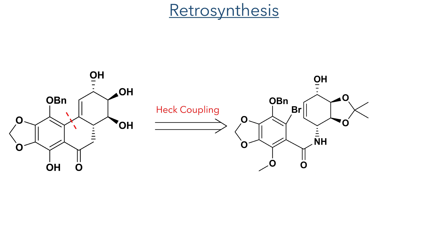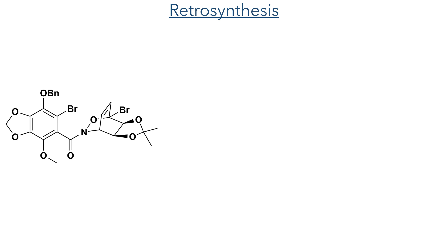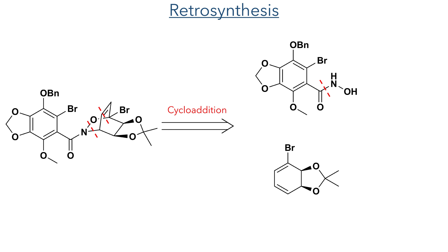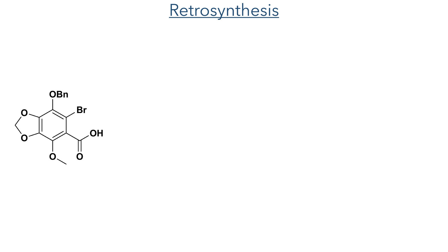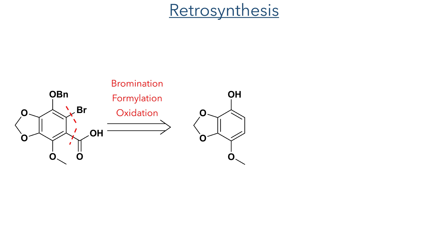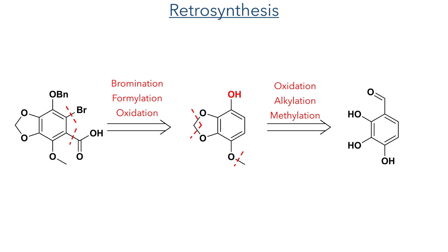So let's start with the retrosynthesis. They could first disconnect at the carbon-carbon bond that holds the polycyclic ring system together, and this could be installed using a Heck reaction. To produce the ring bearing the 1,4-amino-alcohol motif they could use a reductive ring opening of an oxazine, which would result from a cycloaddition between a diene and a nitrosyl group generated in situ from a hydroxamic acid. This hydroxamic acid could be introduced using chlorination and hydroxylamine of a carboxylic acid. The hexasubstituted compound required could be produced using bromination, formylation, and oxidation chemistry, ultimately starting from a trihydroxylated benzaldehyde.